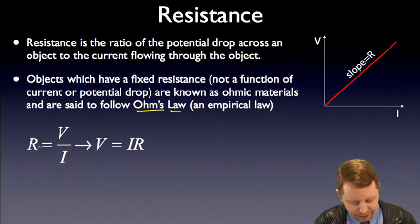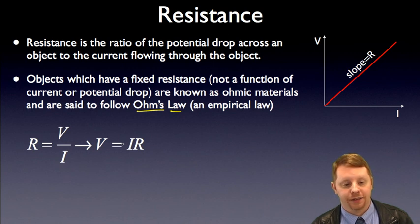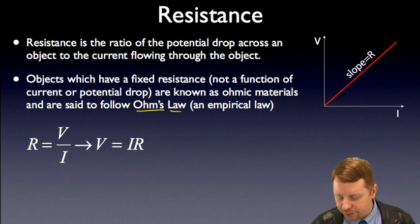So, R, the resistance, is equal to potential over current, and for ohmic materials, voltage drop, then, is IR, assuming R again, is not a, that R is a constant. So, that's Ohm's law and resistance.